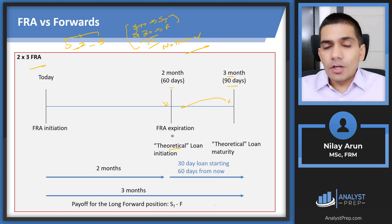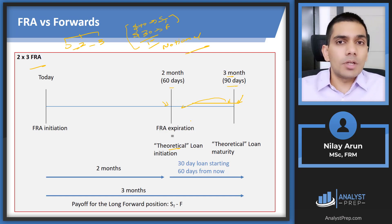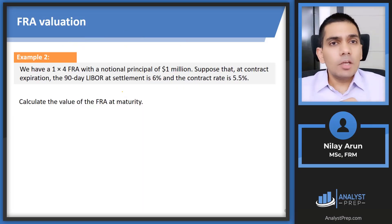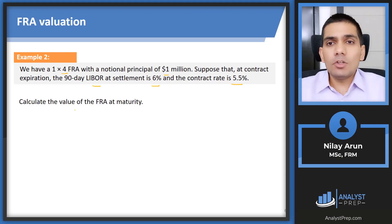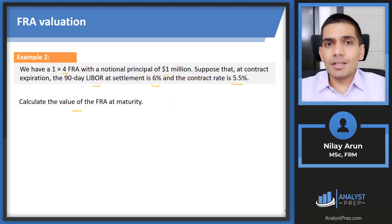The payoff for the long is still ST minus F, but since it occurs at the end of the loan period, we discount it back to the FRA expiration date for cash settlement. Now let's try a question: a 1×4 FRA with a notional principal of one million dollars. At contract expiration, the 90-day LIBOR at settlement is 6% and the contract rate is 5.5%. Calculate the value of the FRA at maturity from the perspective of the long party — the borrower.